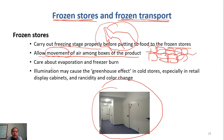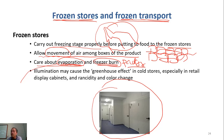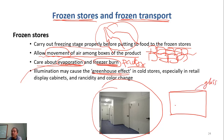We also try to limit evaporation and freezer burn. To prevent freezer burn, we need proper packaging. The cause of freezer burn is sublimation — the conversion from ice directly to vapor — and if you lose water over a long term, you will have freezer burn. We also need to be careful of the greenhouse effect, which normally occurs in supermarkets where food is placed in a freezer with a glass cover so customers can see the product inside.